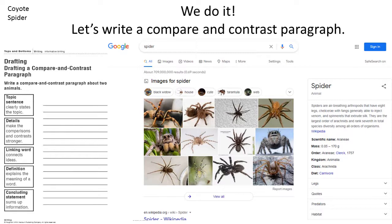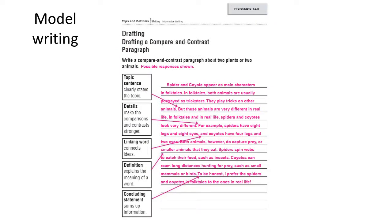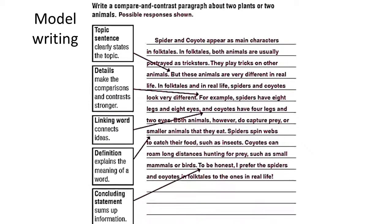Now let's have a closer look at this handout. I first read about the two animals, then made mental pointers about the differences and similarities, and then started writing. I began with a topic sentence — and remember, your topic sentence should clearly state the topic. So let's start reading: Spider and coyote appear as main characters in folktales. That's my opening sentence. Here I tell the reader that I'm writing about a spider and a coyote — and specifically in folktales. Then I wrote: in folktales, both animals are usually portrayed as tricksters. They play tricks on other animals. But these animals are very different in real life. This sentence clearly states the topic: I'm going to begin comparing and contrasting these two animals. And you can see the arrow right there.